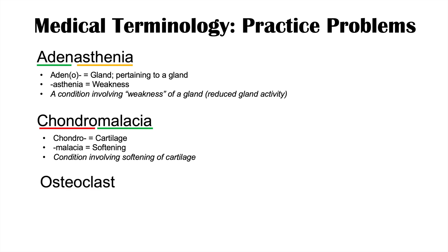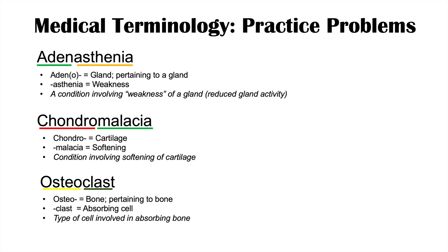The next word is osteoclast. Osteo means bone or pertaining to bone. The suffix clast clears bone — it's actually an absorbing cell. So an osteoclast is a type of cell involved in absorbing, degrading, or clearing bone.